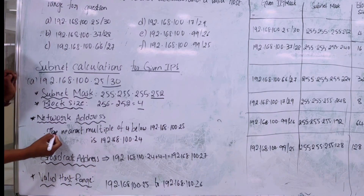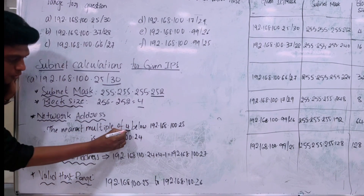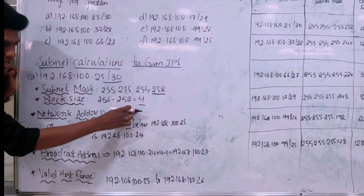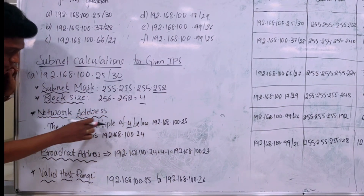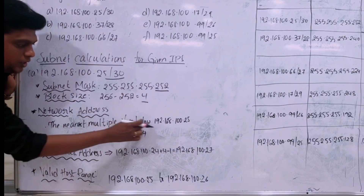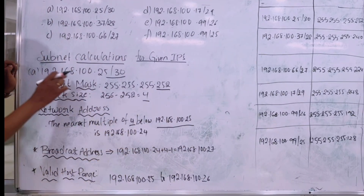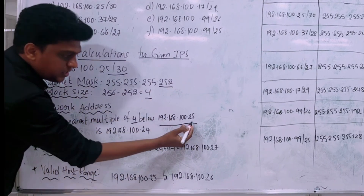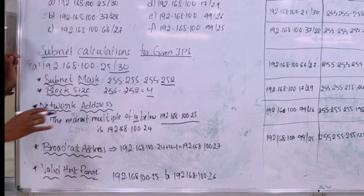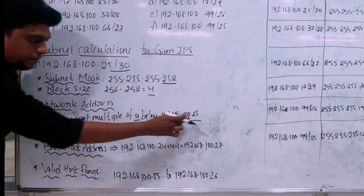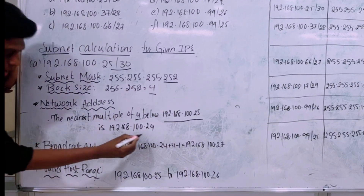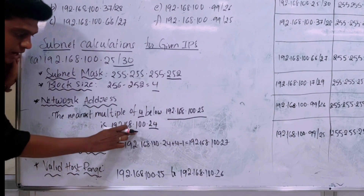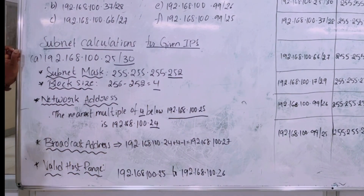For the network address, we use the method of finding the nearest multiple of the block size below the given host value. The block size is 4, and the given host value is 25. The nearest multiple of 4 that is below 25 is 24. So 192.168.100.24 is the network address.